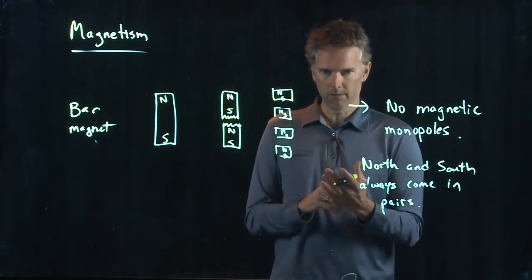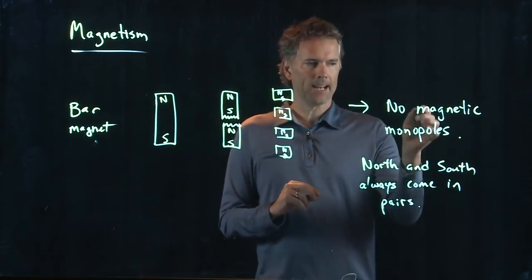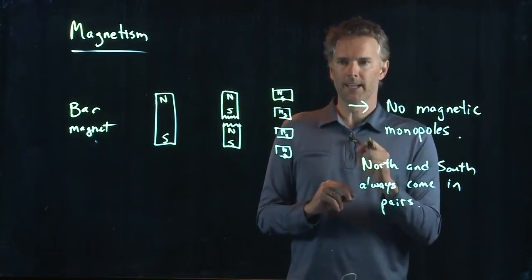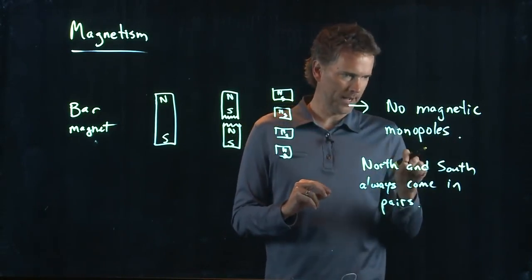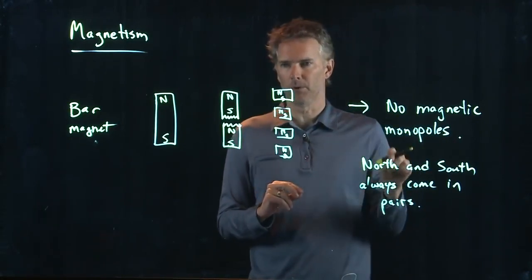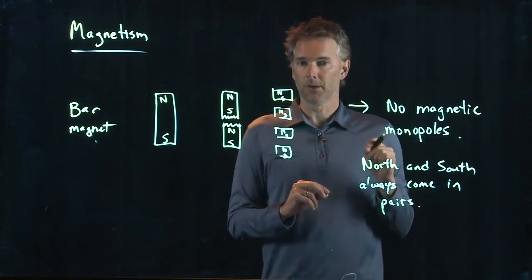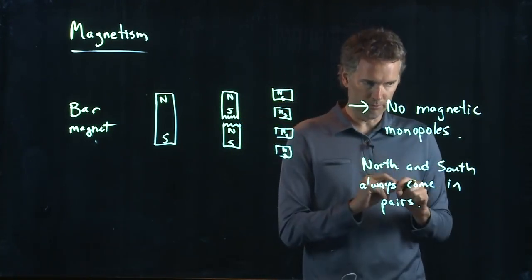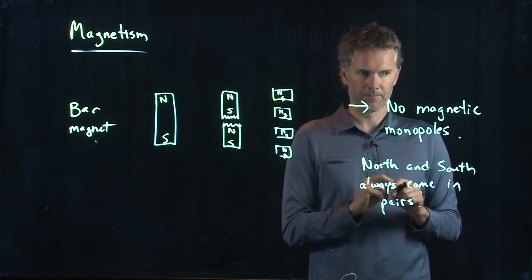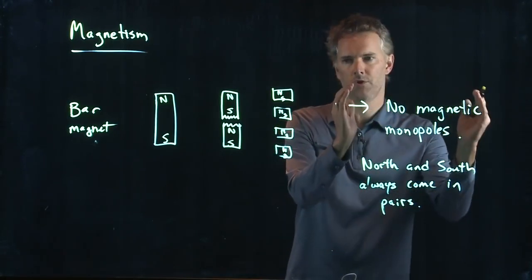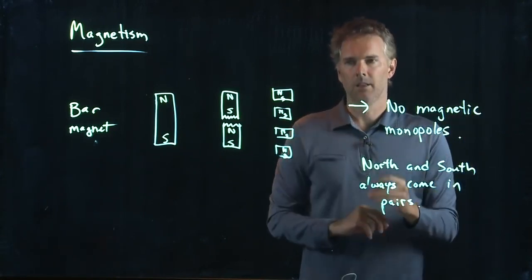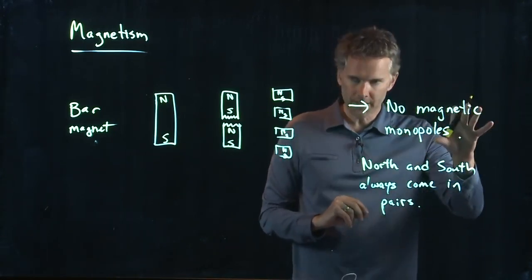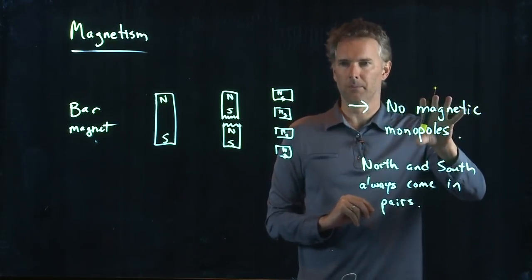Now, there is a little bit of a caveat, which Professor Dalakashvili alluded to. There are theories that magnetic monopoles should exist. That there should be a north pole all by itself. And there should be a south pole all by itself. But currently, there has been no experimental proof that those exist. Okay, so this is the current understanding of the universe. But, 10 years from now, 50 years from now, this may no longer be true.